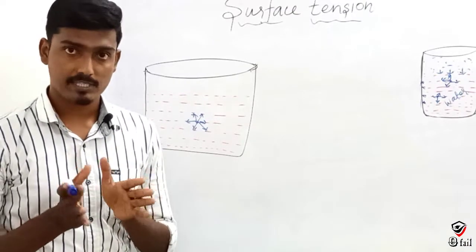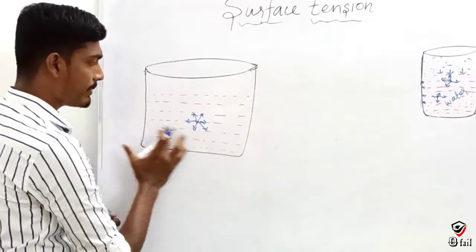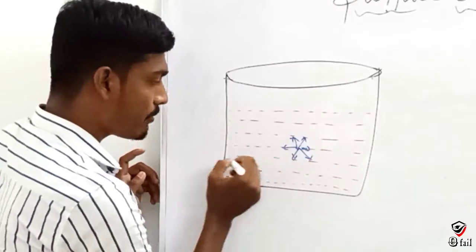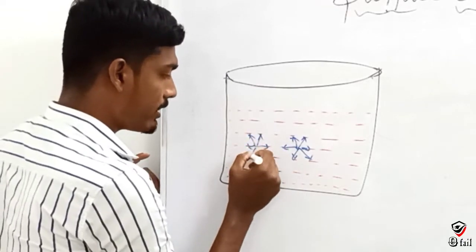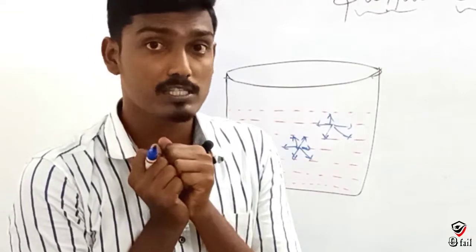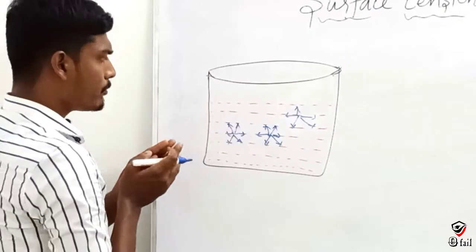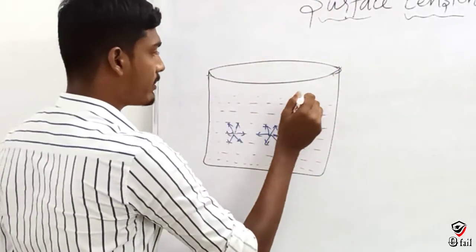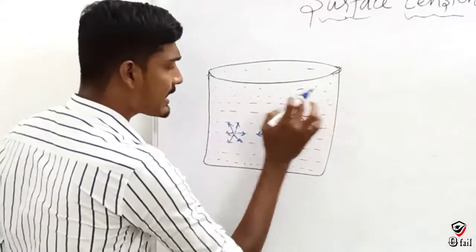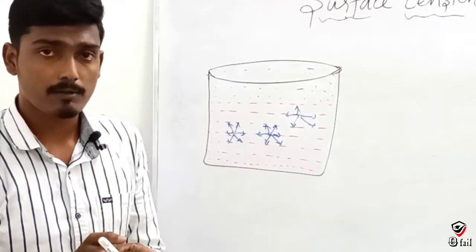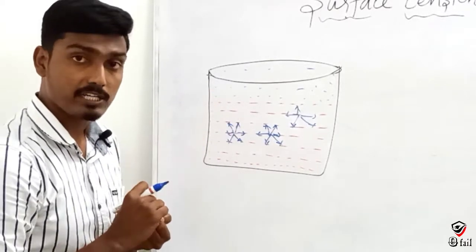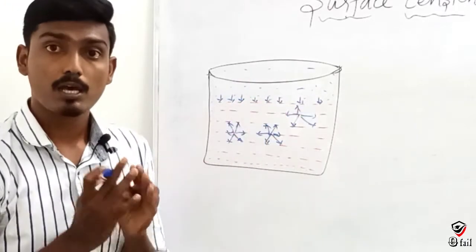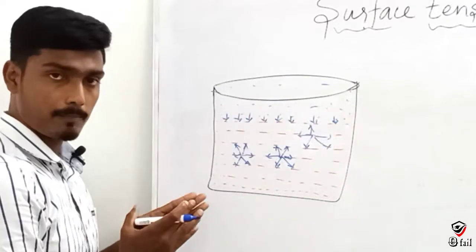Now let us explain what is surface tension. In the water there is a cohesive force between water molecules. At the open surface, when atmosphere air is present, there is an adhesive force. If the adhesive force is less than the cohesive force, the water molecules at the surface are pulled inward. This creates surface tension.